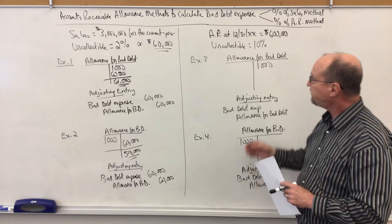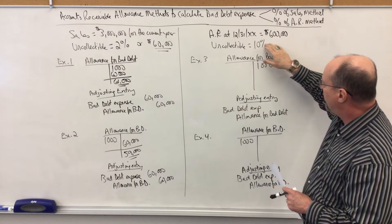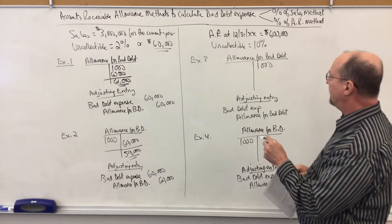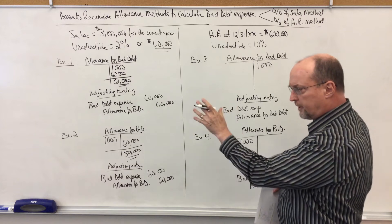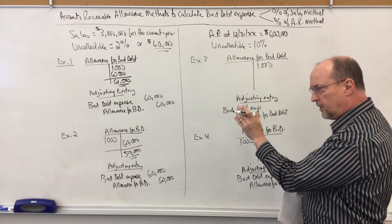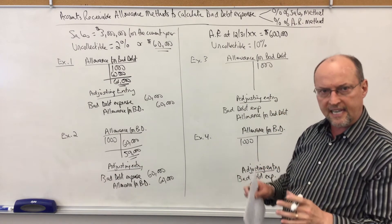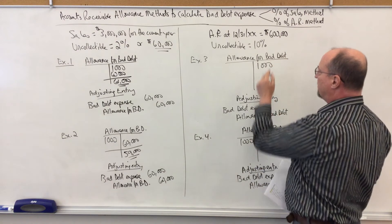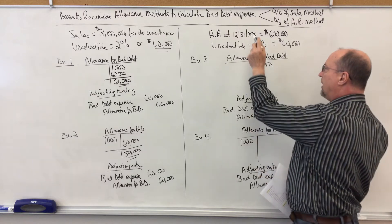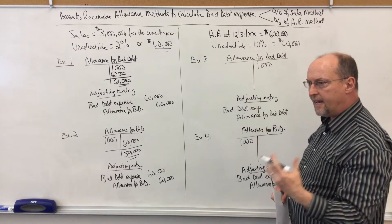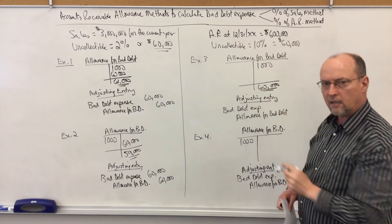We take total accounts receivable as of December 31st — $600,000 — and multiply by the uncollectible percentage. This percentage comes from an analysis of the accounts receivable aging report, which shows total AR broken down by whether accounts are current, one month past due, two months, three months past due, etc. We multiply $600,000 times 10%, which equals $60,000. That number represents what we believe the ending balance in the allowance should reflect — $60,000 of uncollectible receivables.